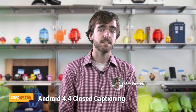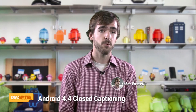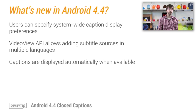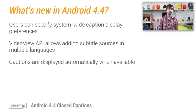These APIs allow you to attach subtitles to your video that are displayed according to the user's preferences. Let's start with a quick overview of what's new for captions in Android 4.4. First, users can now specify system-wide captioning preferences, ranging from whether captions should be shown to what color they should be shown in. For most developers, though, you won't need to worry about reading these preferences or rendering your own captions. Simply adding a subtitle source to a video view is enough to show captions according to the user's preferences.